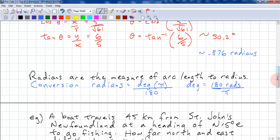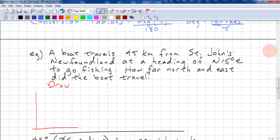Here's an example of trig on the Cartesian coordinates. A boat travels 45 kilometers from St. John's, Newfoundland, on a heading of north 15 degrees east to go fishing. How far north and east did the boat travel? So, let's draw this.